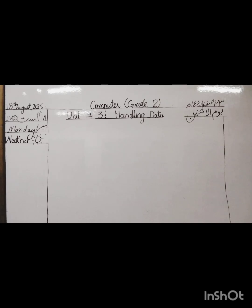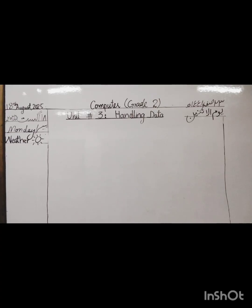Who can tell me what is the date today? Maham, you said right — today is Monday. Now, who can tell me what is the date today in the Islamic calendar? Correct answer: 23, 14, 47.